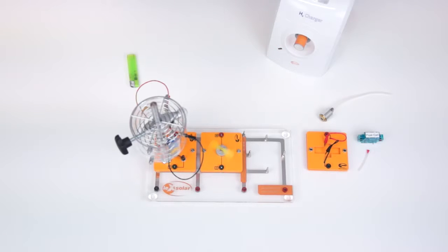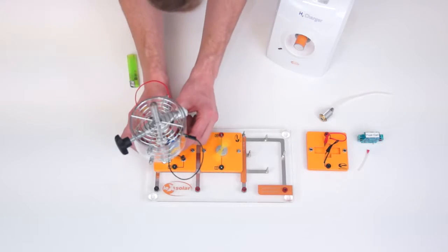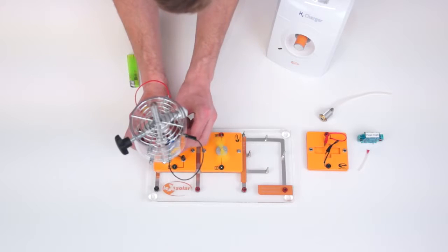In the second part of our experiment we want to use the PEM fuel cell. For this we turn off the gas supply and replace the SOFC module with the PEM fuel cell.